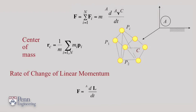And remind yourself that the right-hand side is essentially the rate of change of linear momentum. So if I call l the linear momentum, then f, the total force, is just equal to the rate of change of linear momentum. This is Newton's second law for a system of particles.